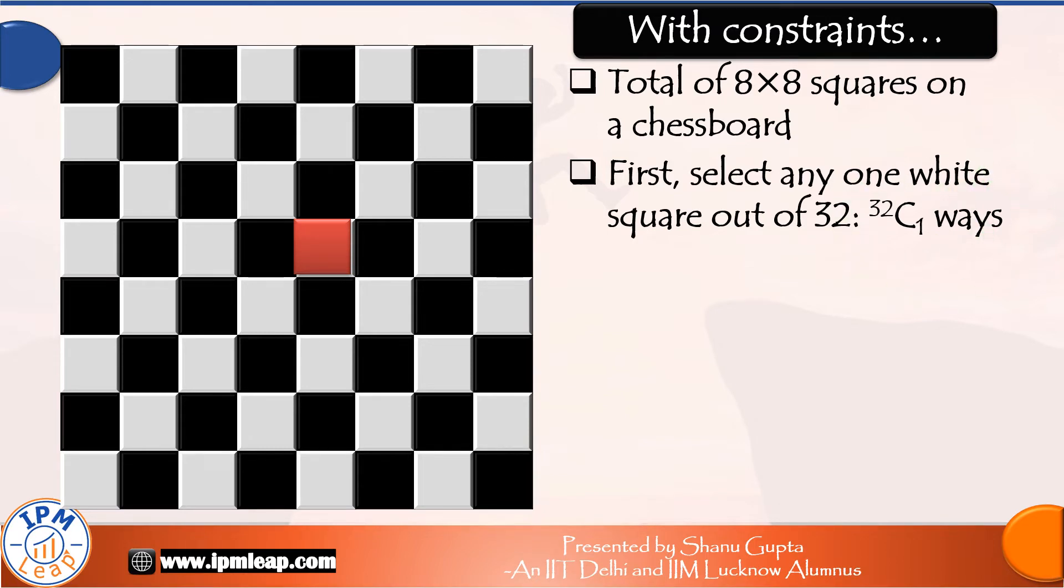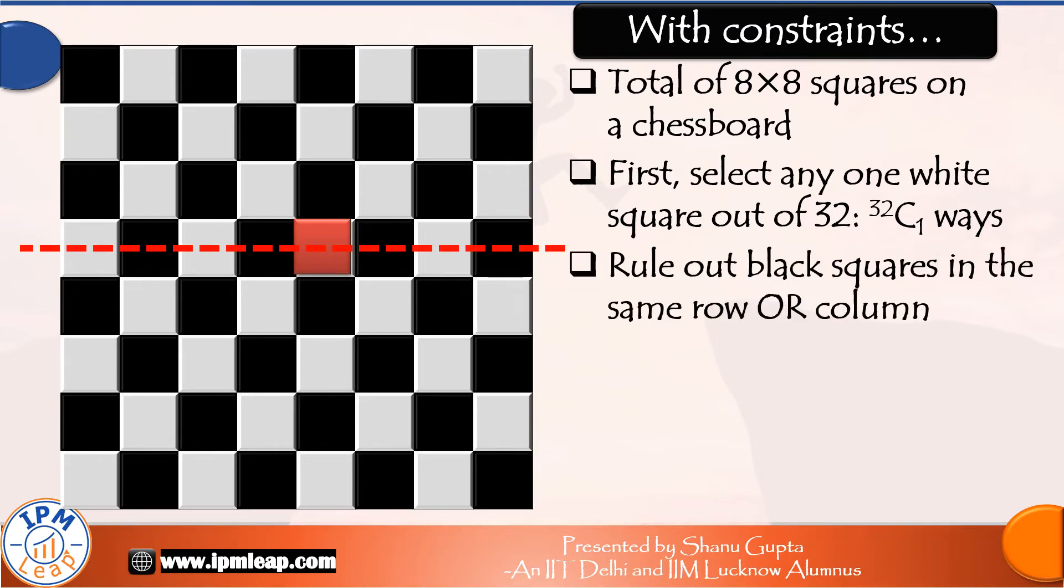Next we must rule out all the black squares which lie in the same row, 4 of them, and rule out all the black squares that lie in the same column, again 4 of them.